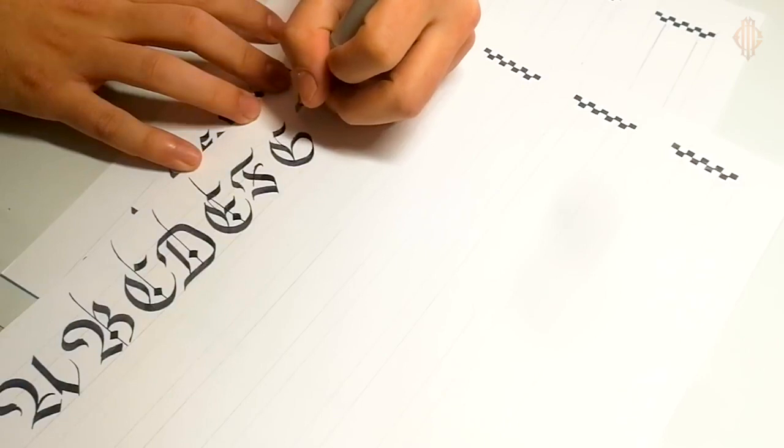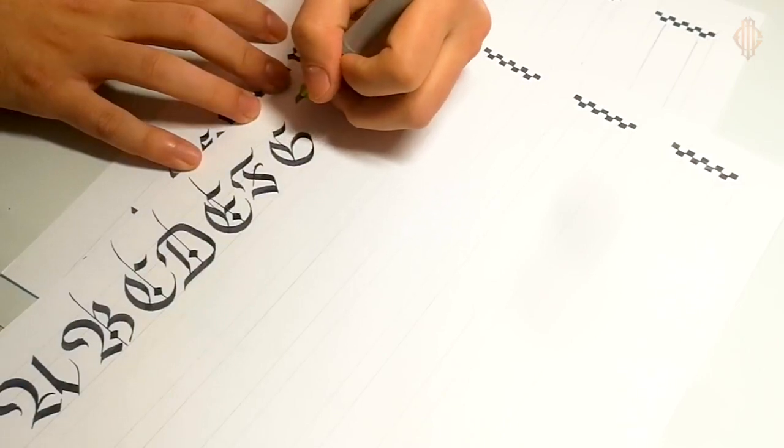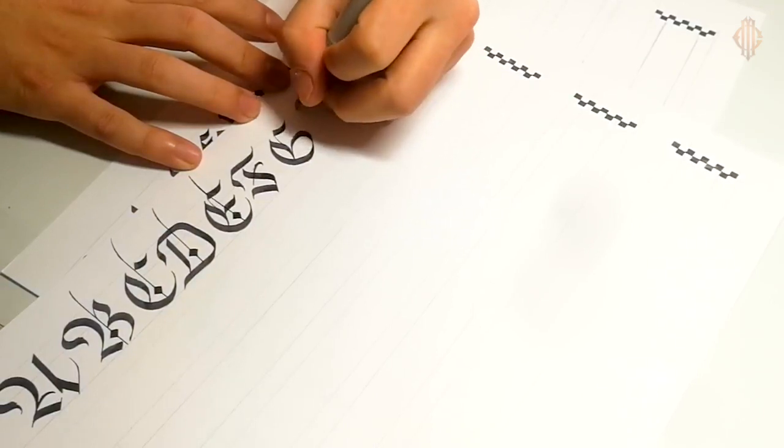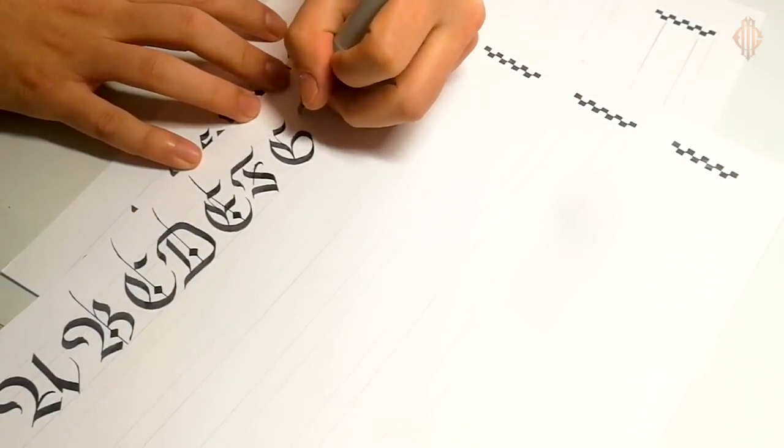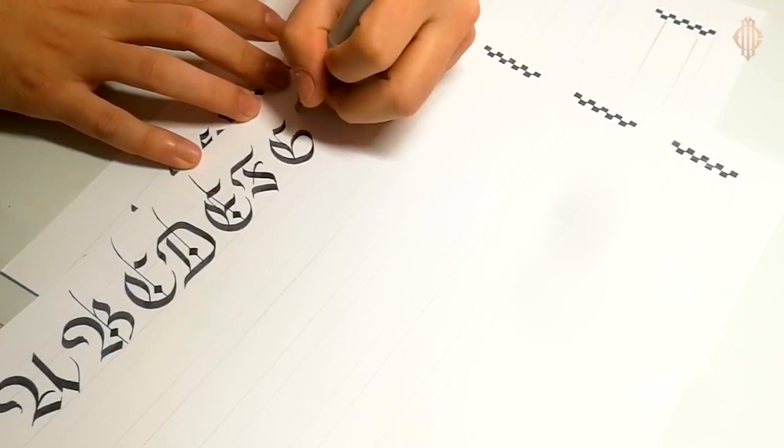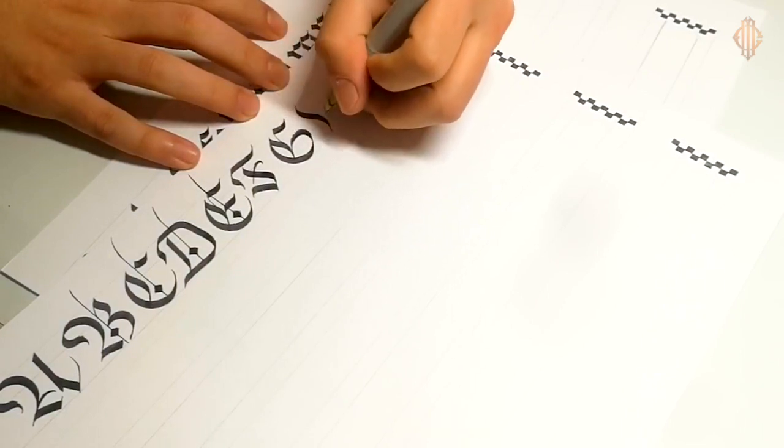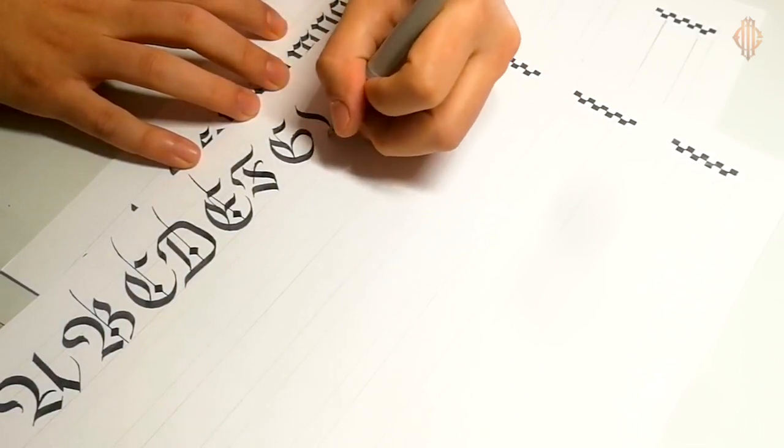But at the beginning, I was struggling with the shapes of the letters. Because, you know, you've got to train your eyes to the shape, to the form of the letter. I found it a little bit difficult at the beginning.